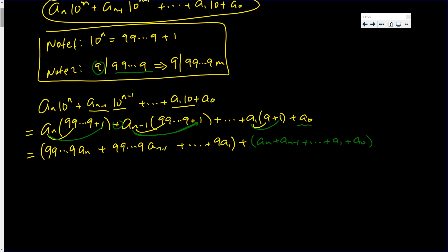Now we said that 9 goes into any string of 9's. So 9 goes into a string of 9's times some integer. So this here is a multiple of 9, this here is a multiple of 9. All of those. Multiple of 9. In the end you have a multiple of 9. Well if you add multiples of 9, you're gonna get a multiple of 9.